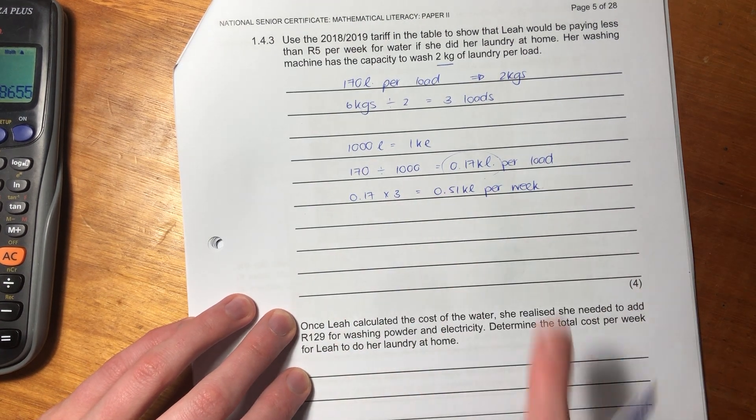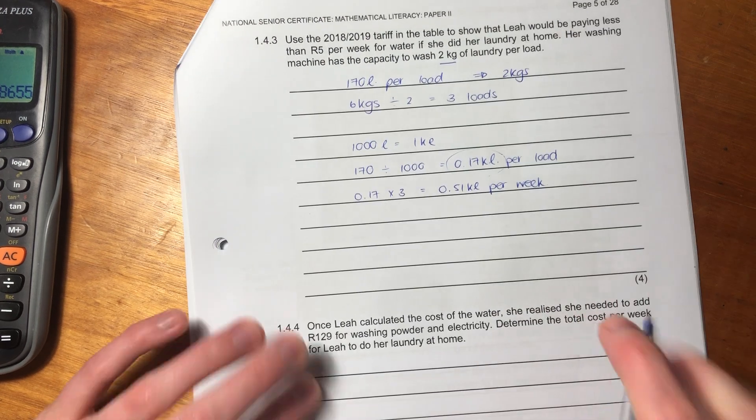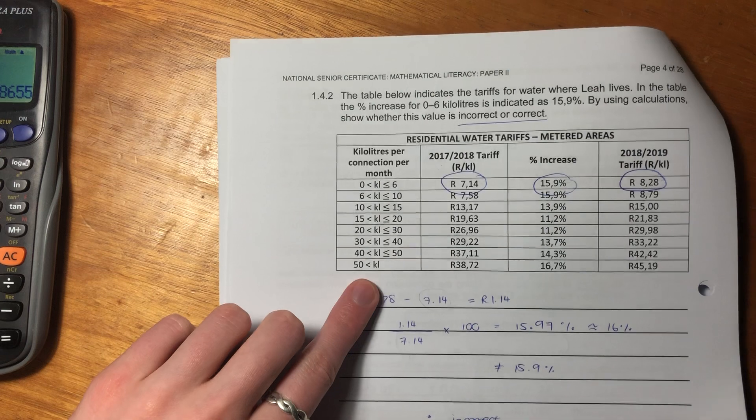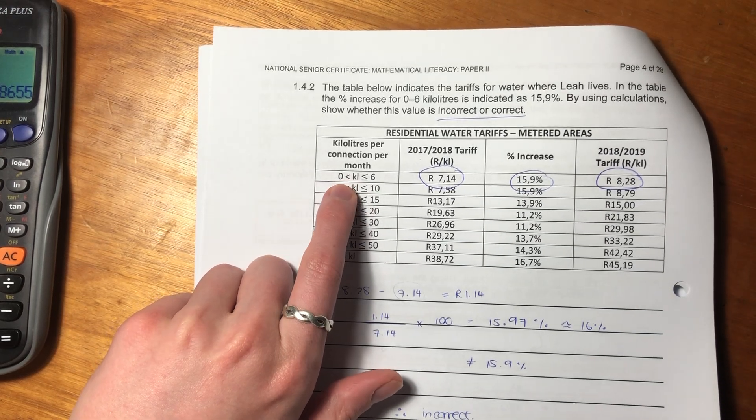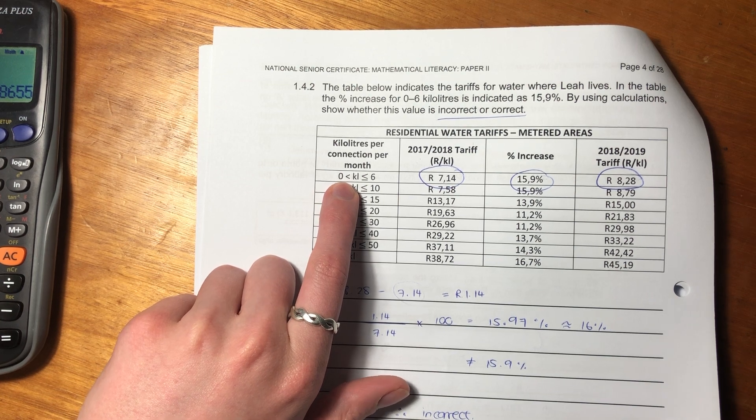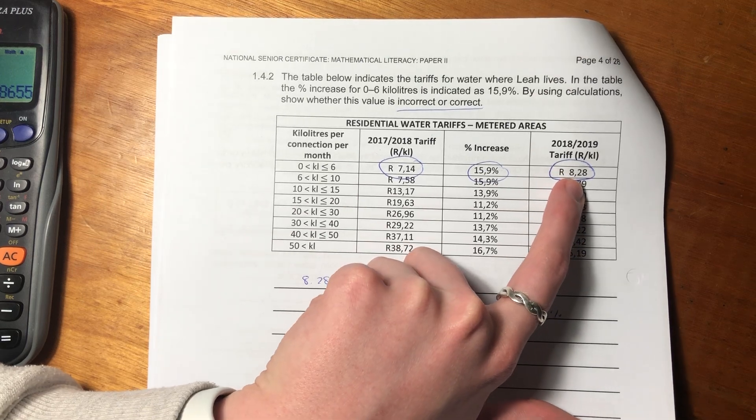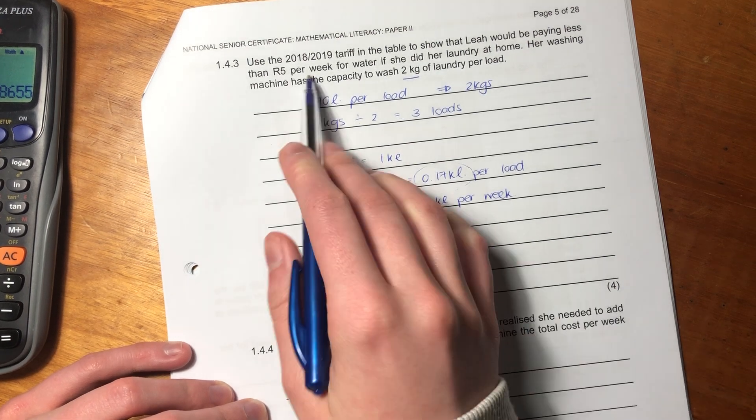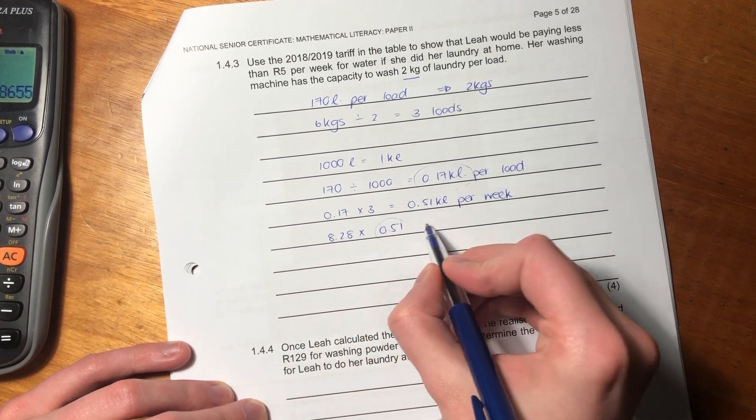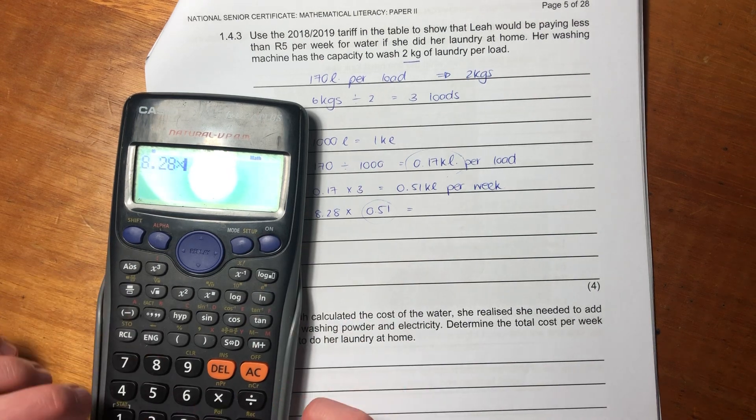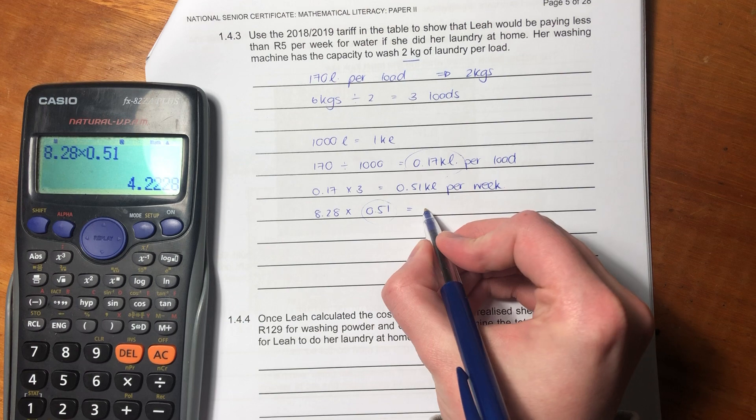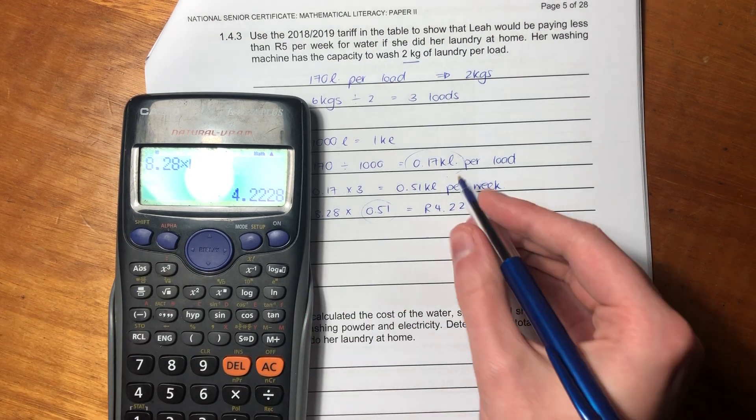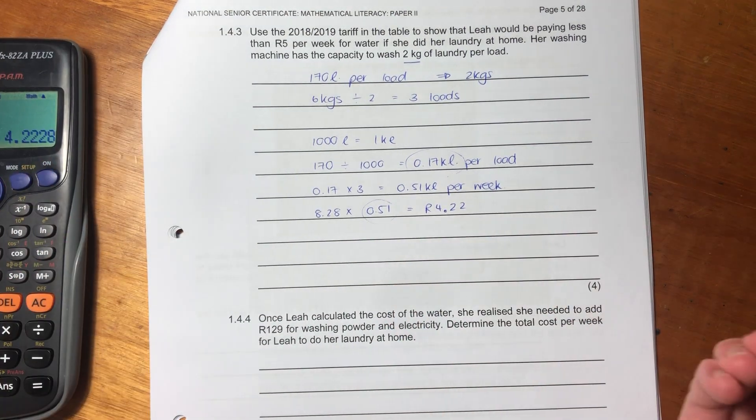She has three loads, so you're going to say 0.17 times 3 equals 0.51 kiloliters per week. Now we know how much she needs per week, and that's what they asked us to figure out how much it costs her per week. Let's go see what interval she fits into. She fits into the first interval because she only has a little bit, she doesn't even have one full kiloliter. It's around a half a kiloliter. So we know that she's going to be paying 8.28 per kiloliter. We're going to say 8.28, because that's the tariff from the year they asked us, times the amount of water she uses. Put that into your calculator, and I rounded off to two decimal places. Remember I did that because we're talking about a currency. Currencies we always round off to two decimal places.